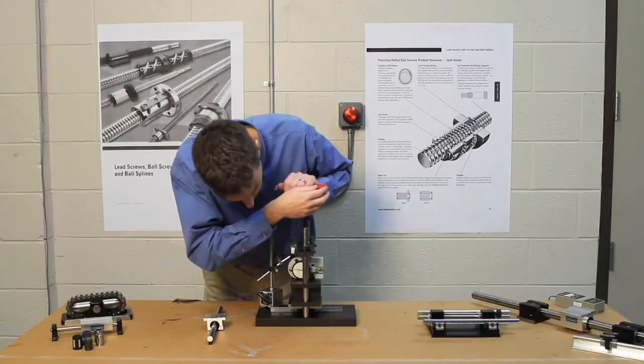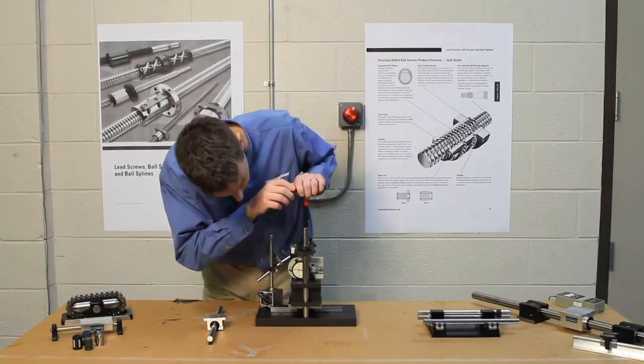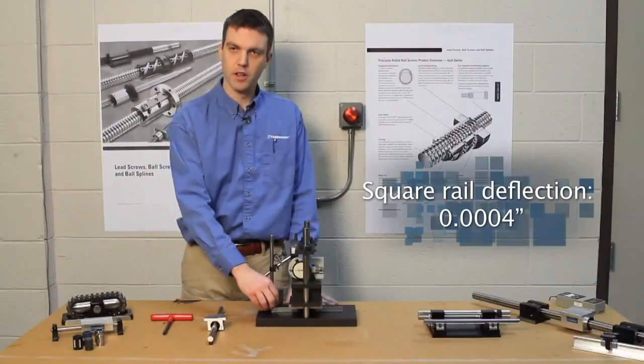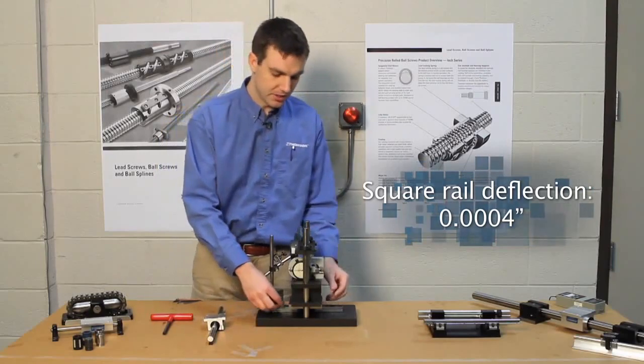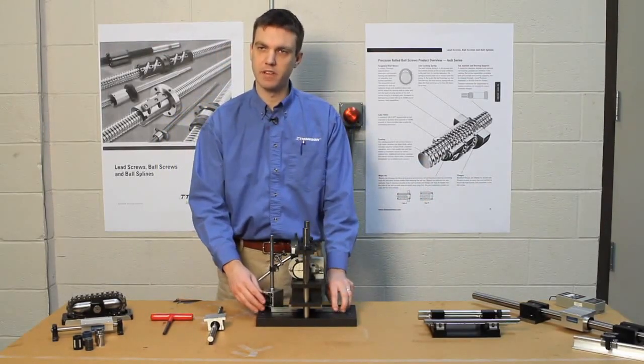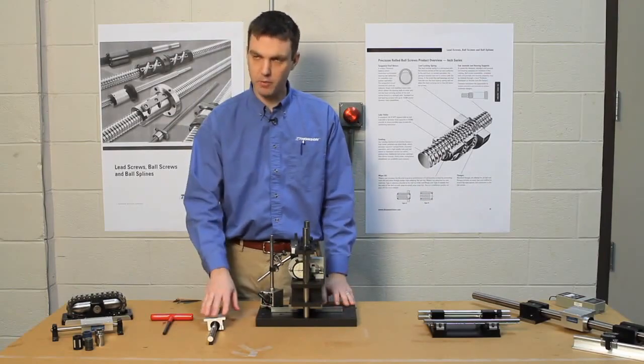Apply a 320 pound load to this rail. What this shows is that the deflection characteristics are much better in the square rail versus the round rail. So that means in your system you can apply more load to the square rail and expect less deflection out of the total system than you can with a round rail.